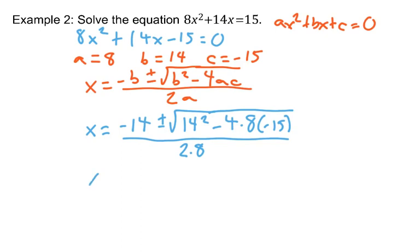So, we would have x is equal to negative 14 plus or minus. Let's work under the radical. May need a calculator for some of this. That's okay. 14 squared is 196. Negative 4 times 8 times negative 15, that's going to be a positive. So, negative times a negative is a positive. And the 4 times the 8 times the 15 is 480. Underneath, down there in the denominator, 2 times 8 is 16.